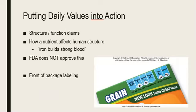You will also see structure-function claims, which describe how a nutrient affects the human body's structure or function — for example, 'iron builds strong blood.' These claims do not focus on reducing disease risk. The FDA does not approve or authorize these types of claims on packaging; manufacturers are responsible for ensuring the accuracy of their claims.